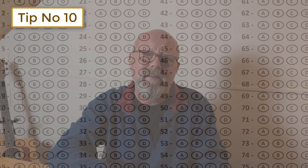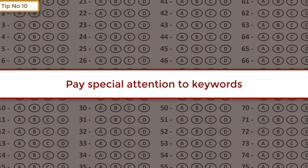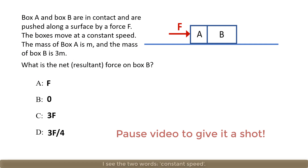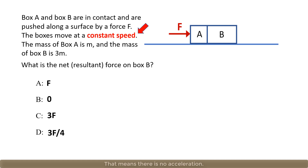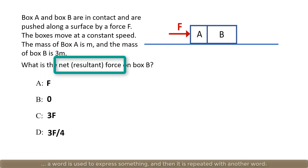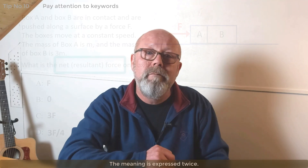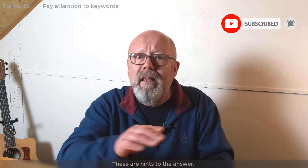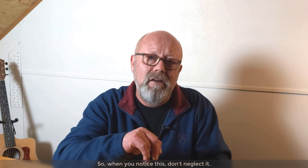Tip number 10: pay special attention to keywords in the questions. Some questions look really complicated, but within the text there could be a keyword that gives away the answer. For example, seeing the words 'constant speed' means there is no acceleration, therefore the resultant force is zero — done. In some cases a word is used to express something and then repeated with another word, meaning the meaning is expressed twice. Sometimes a word is written in bold. These things are on purpose — they are hints to the answer. When you notice this, don't neglect it.